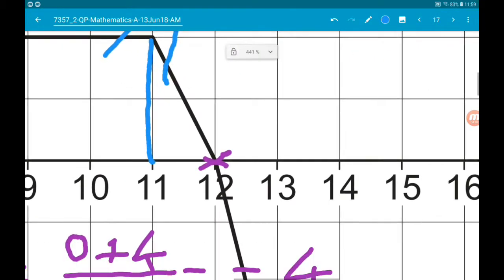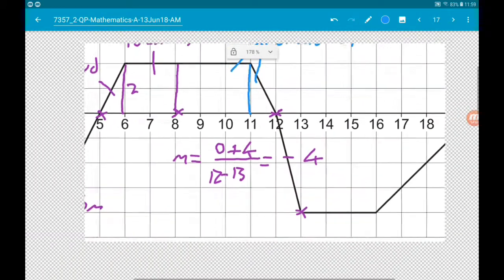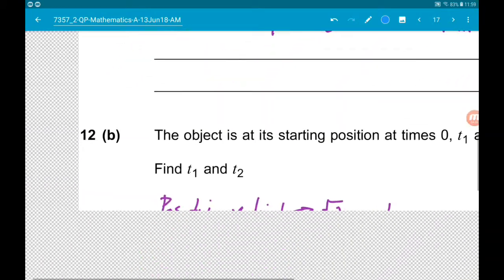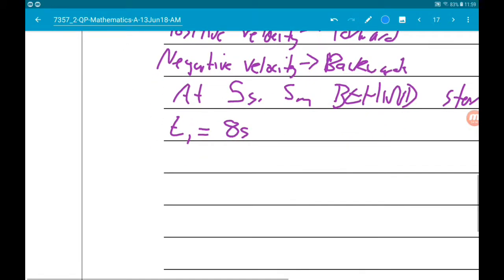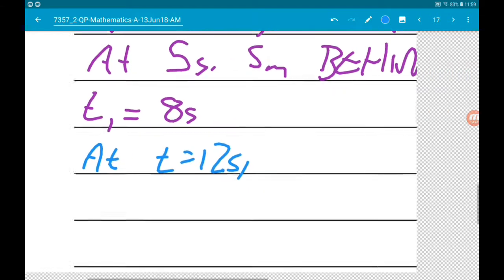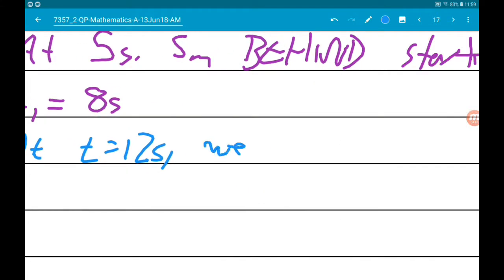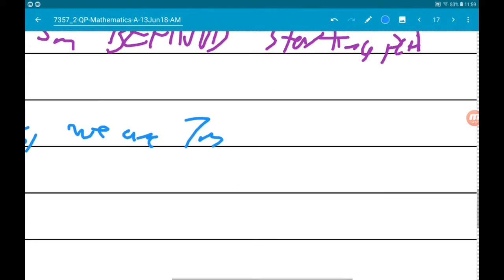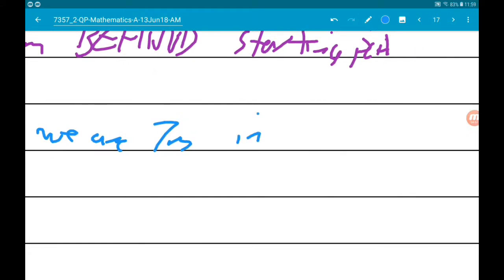So at 12 seconds, we are 7 meters in front. So at t equals 12 seconds, we are 7 meters in front of the starting point.